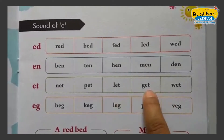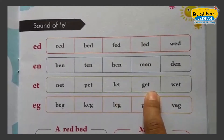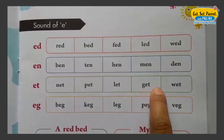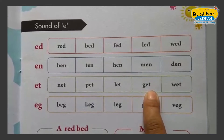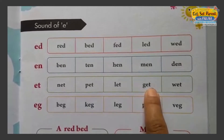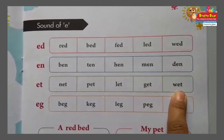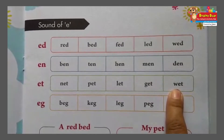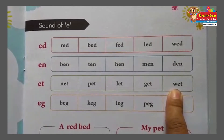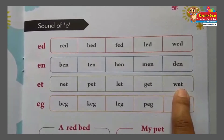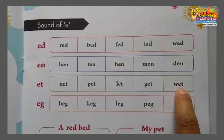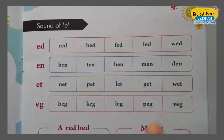Next: G, E, T. Phonic of G: G. Phonic of E: E. Phonic of T: T. G-E-T. Next: W, E, T. Phonic of W: W. Phonic of E: E. Phonic of T: T. W-E-T.